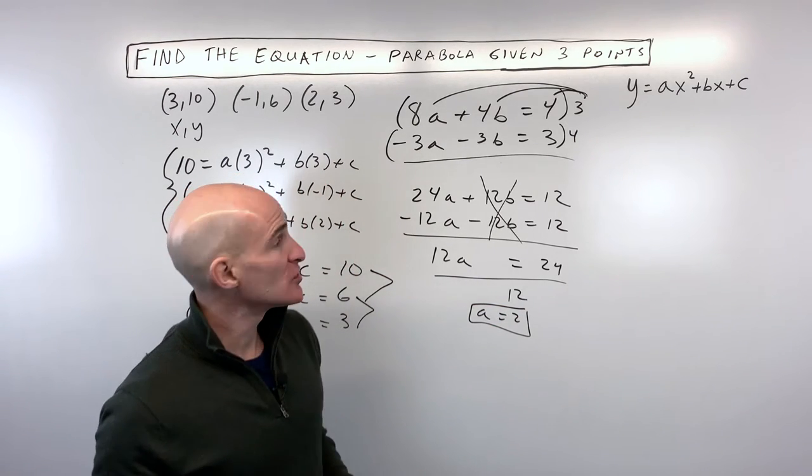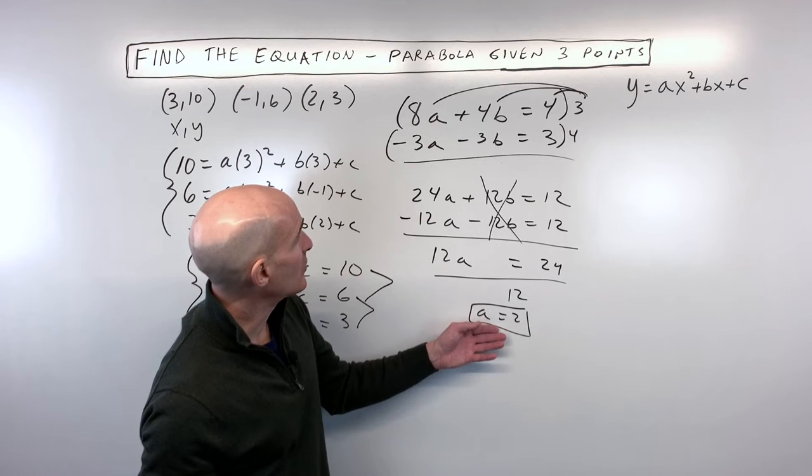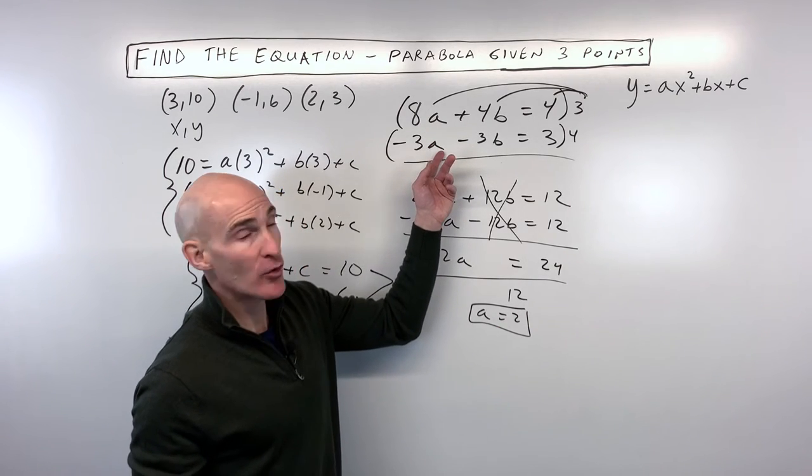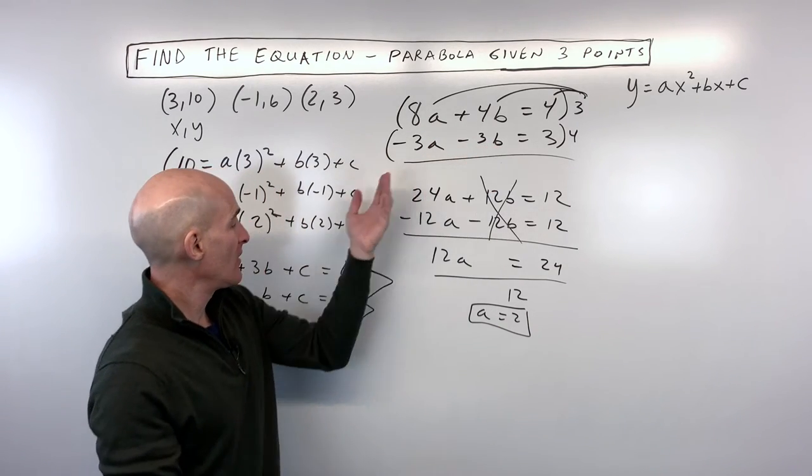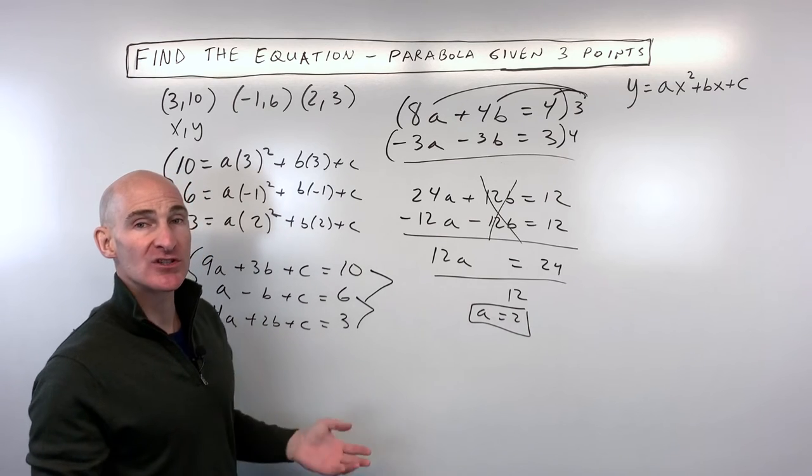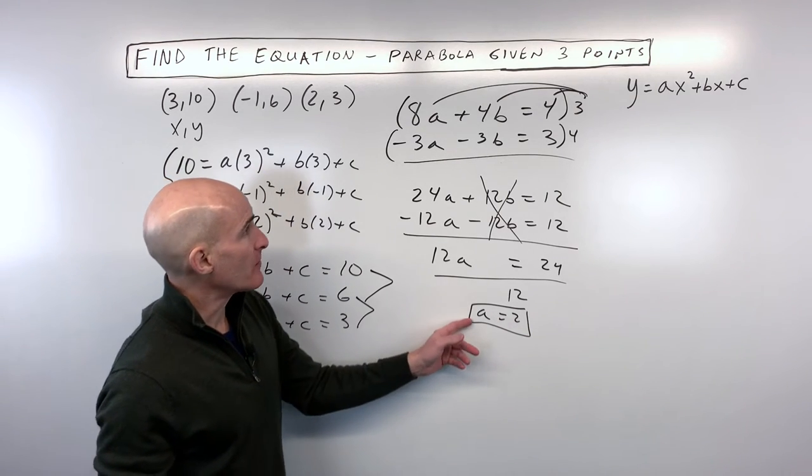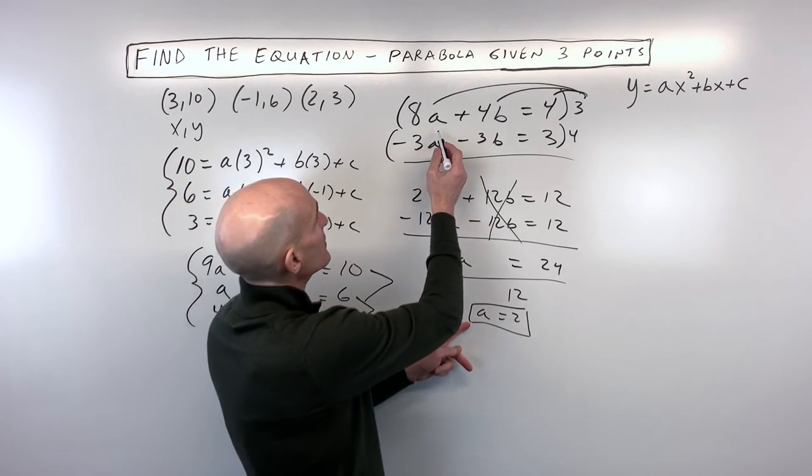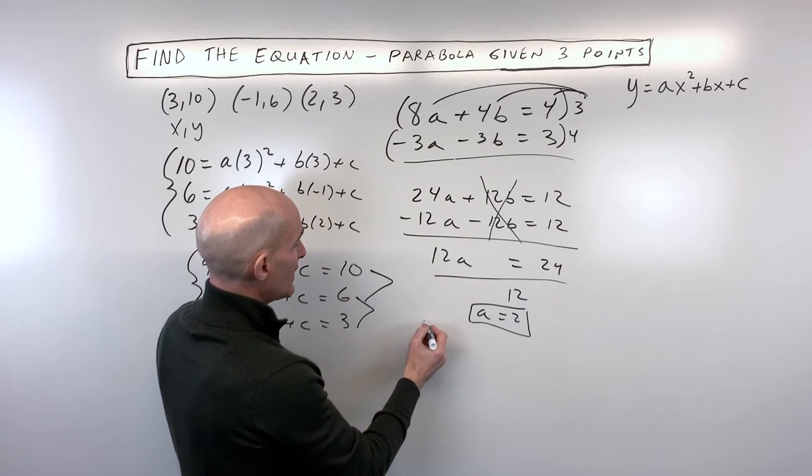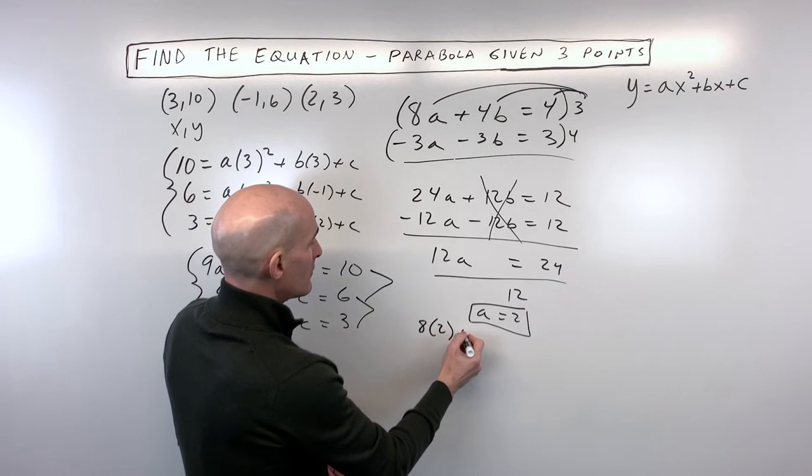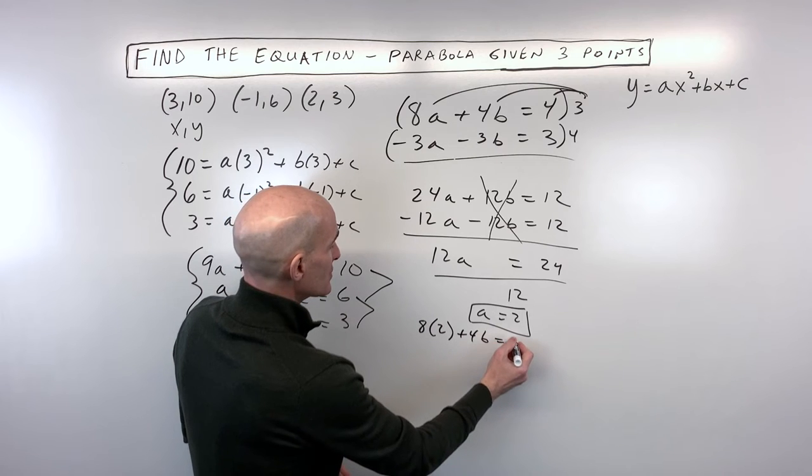Okay so now what we're going to do is work our way backwards. We're going to take a equals 2, put it into one of the two variable equations, solve for b, then go back to one of our three variable equations and solve for c. So it's like back substitution. So if we put 2 in, let's put in this top equation, we have 8 times 2